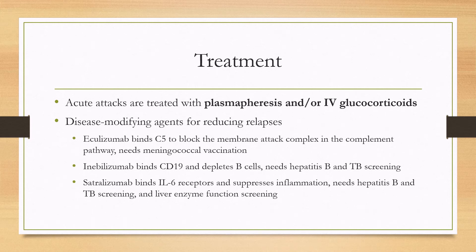For treatment, acute attacks are typically treated with plasmapheresis and/or IV glucocorticoids, though the data is somewhat sparse. There are also disease-modifying agents for reducing relapses. Eculizumab binds C5 to block the formation of the membrane attack complex in the complement pathway, and because of this a meningococcal vaccination is required.